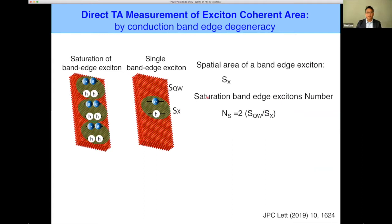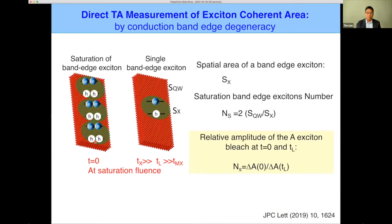With exactly the same measurement approach, here is a cartoon of a nanoplatelet. If the exciton spatial area is roughly one-third of the area of the quantum well, then in this experiment I should see the number of band-edge excitons saturate at six — because there are three spatial areas that can each accommodate excitons, and each exciton state is two-fold degenerate. Using transient absorption, we can measure the ratio of the early signal versus the later signal to tell us how many excitons we had at the beginning.